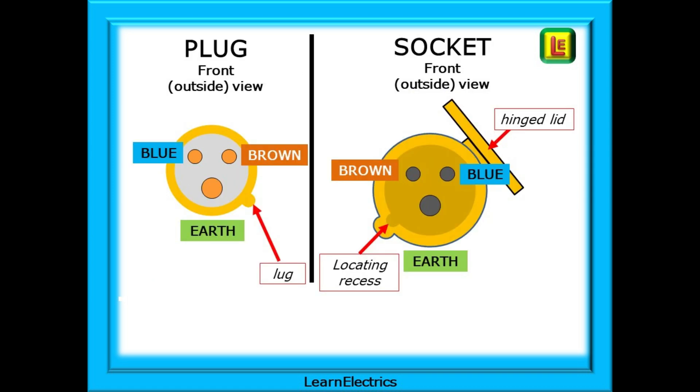Look at the plug and socket together as outside views - what you will see when they are assembled. The earth is the obvious bigger brass pin. The blue wire will always be 180 degrees opposite the lug, so it's on the left as we view the plug in this drawing. The brown will be on the remaining pin on the right in this view.